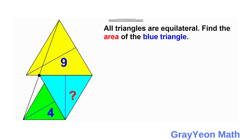Next, we label the segments of these figures. For this yellow triangle, we label this half of the side to be A, and this is 2A. Since this is from an equilateral triangle, we will have a 30-60-90 triangle, so this blue length is actually A square root of 3.